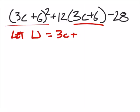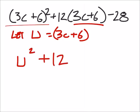So if I said let u be 3c plus 6, and it may help to see that with parentheses, then I can replace 3c plus 6 in parentheses with u. So here I've got u² plus 12, and then that was times 3c plus 6, which I'm just going to say is u, minus 28.